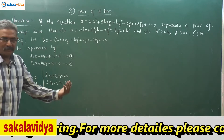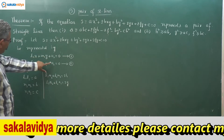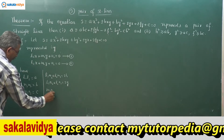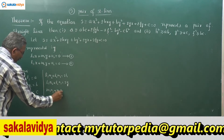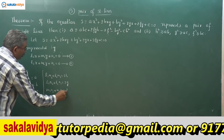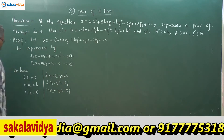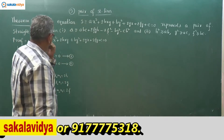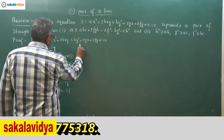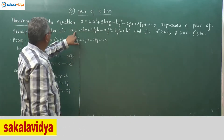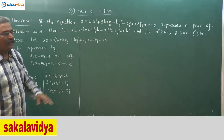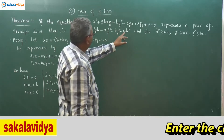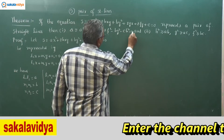Similarly, m₁n₂ + m₂n₁ = 2f. These relationships are important to remember. Now let us prove the first condition: delta = abc + 2fgh − af² − bg² − ch² = 0.